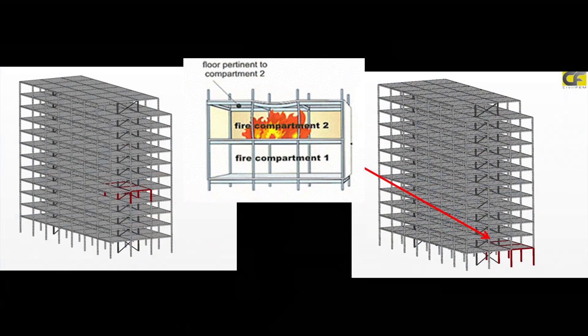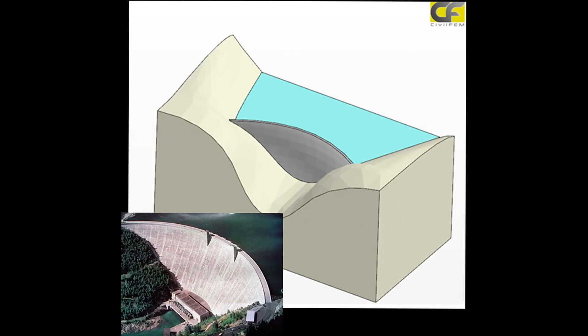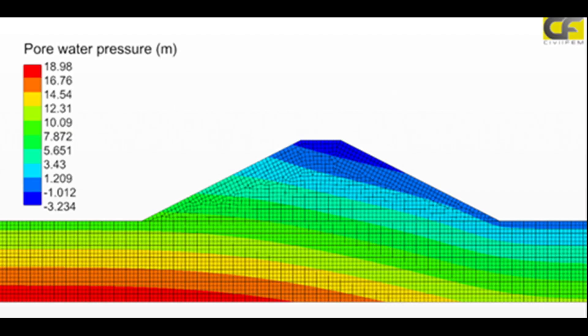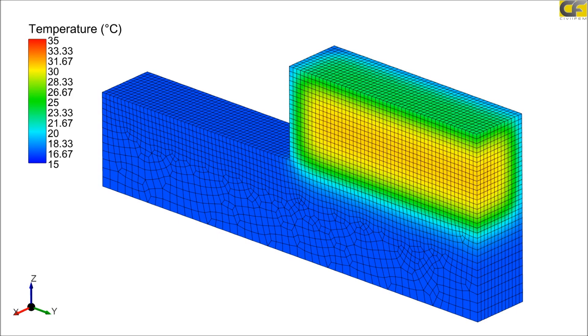CivilFEM can perform multi-physics analysis. One of them is thermal-structural analysis — CivilFEM can perform a thermal analysis first and use the temperatures and thermal results in the structural part, because CivilFEM materials are also thermally dependent. For example, we can model a fire on a steel structure and calculate the time before collapse to support safety evacuation of the building, essentially calculating how long before the fire causes the structure to collapse.